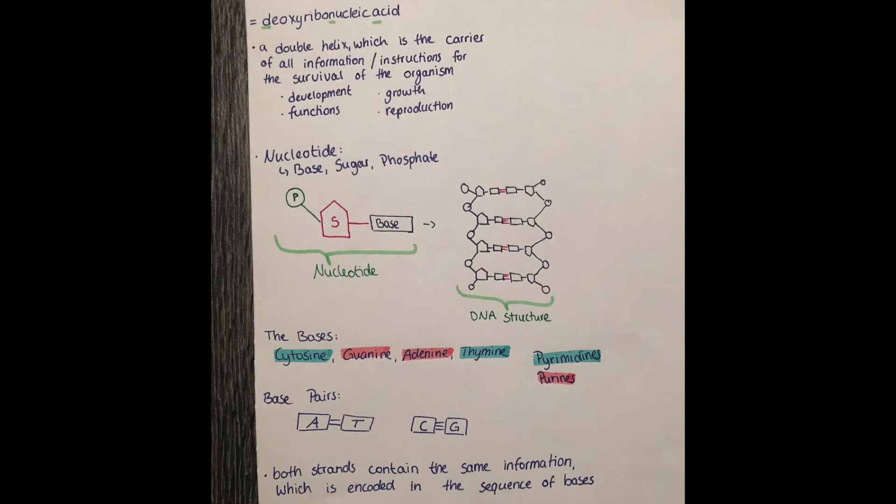The sugar, as I mentioned before, is the deoxyribose, and the bases can be four different kinds of bases in DNA: cytosine, guanine, adenine, and thymine.